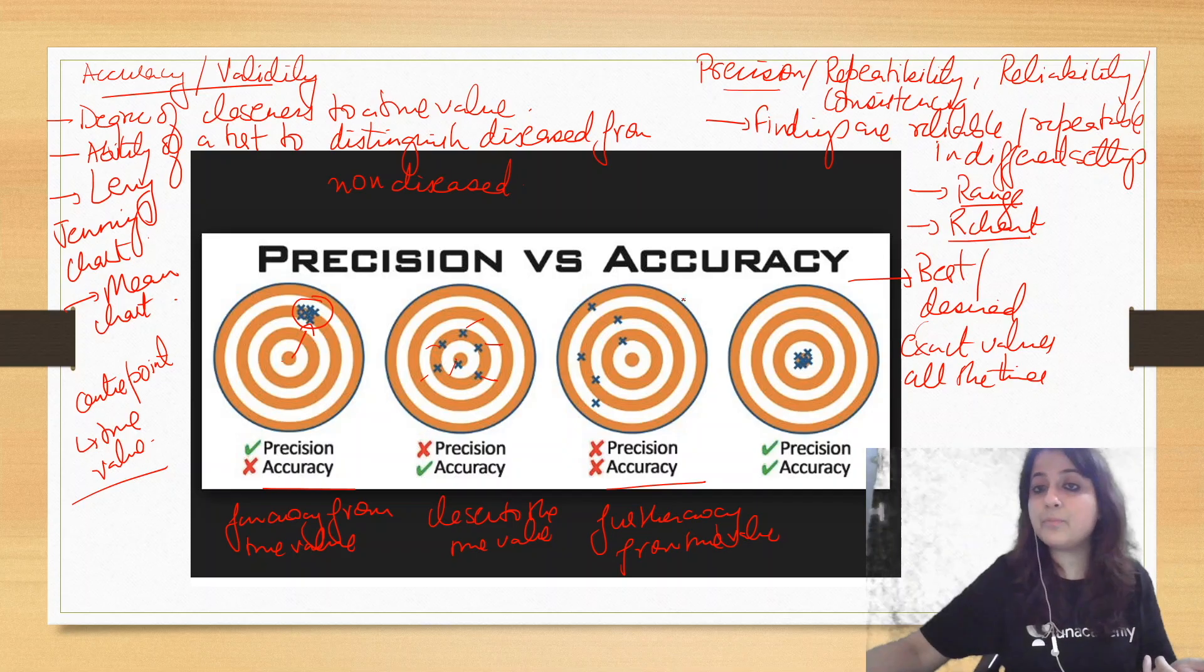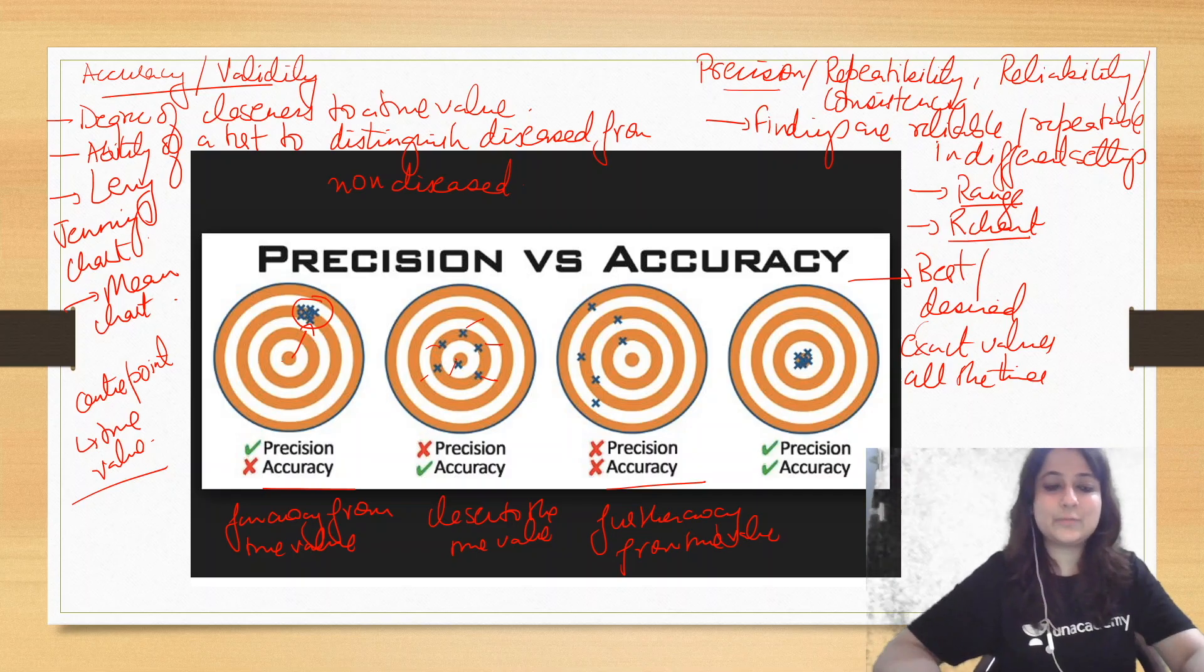So this image is very important. You could be given four images and asked what is the most desirable. So it's the fourth one. So I hope you understood this. Thank you so much for watching.